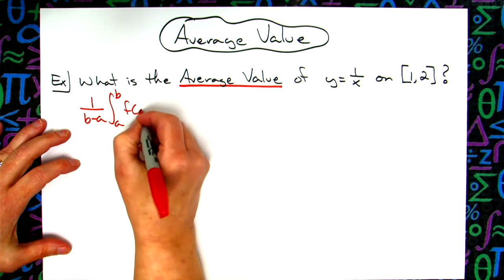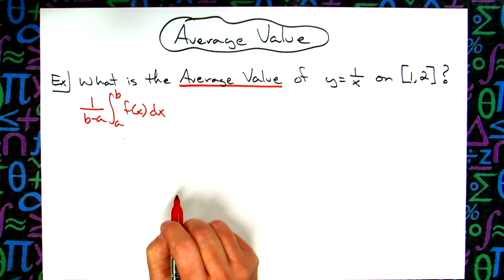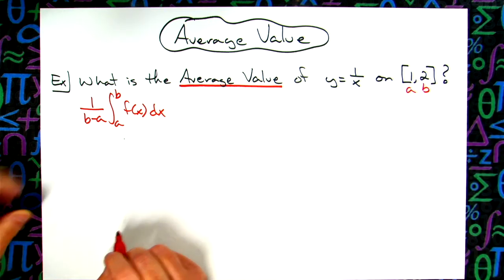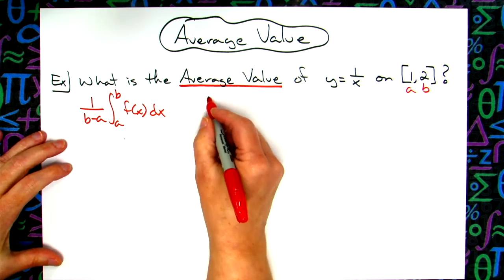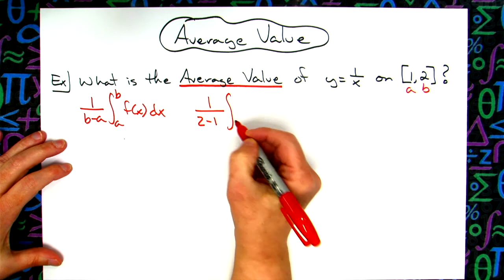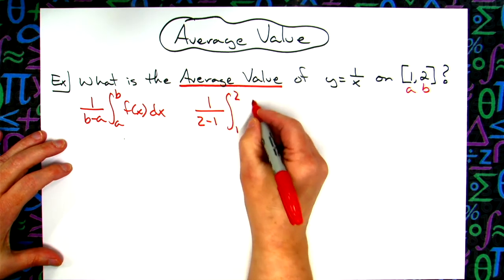That's the formula that you really have to utilize here. So my a is 1 and my b is 2. For my average value on this one, I'm going to have 1 over (2-1), and I'm going to integrate from 1 to 2. My function is 1/x, and then dx.